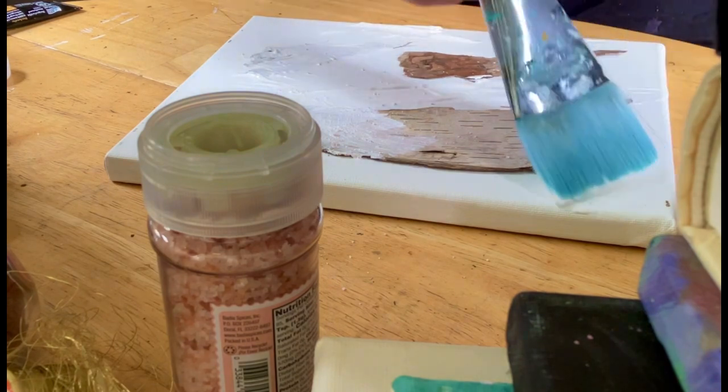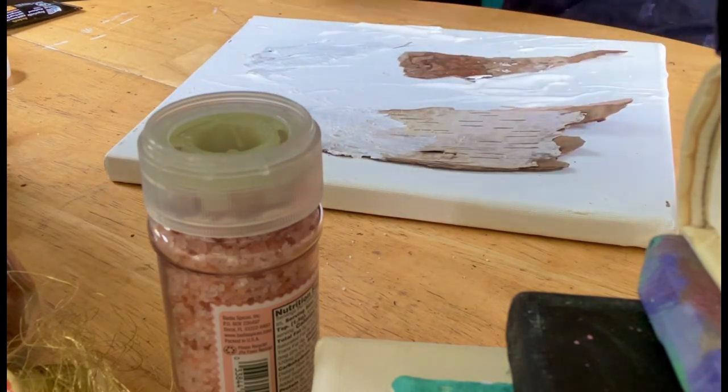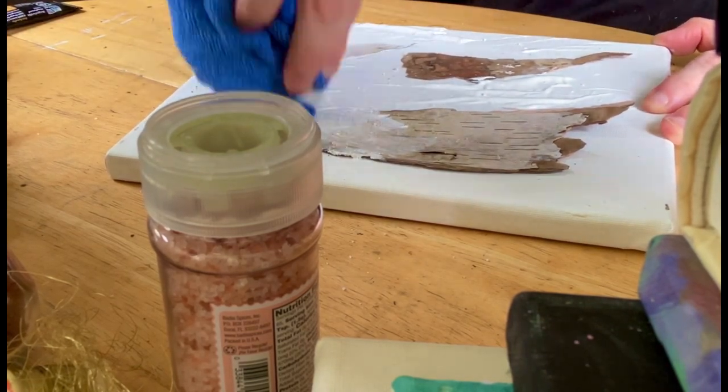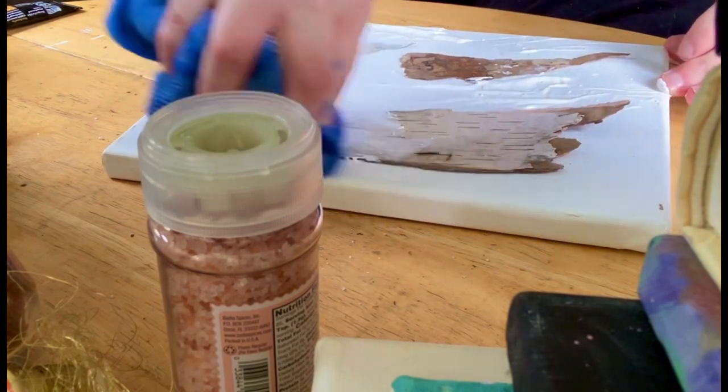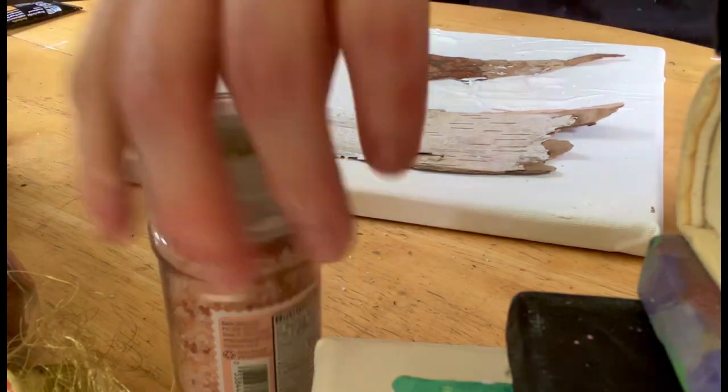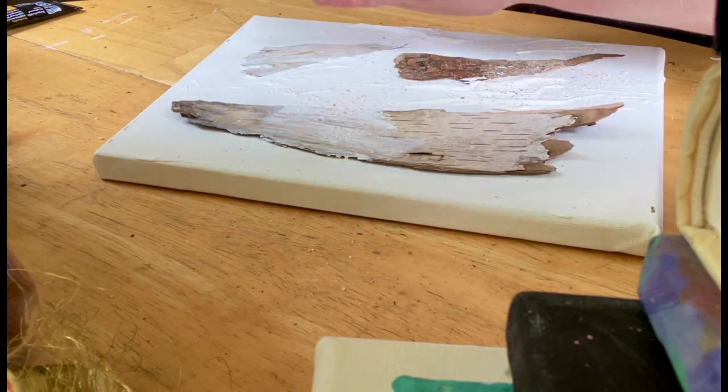My ultimate goal with the piece is I want it to be super inviting. I want people to feel tempted to touch the piece and interact with and relate to the natural organic forms that are here—the birch bark, salt, anything else that might make its way onto the canvas.